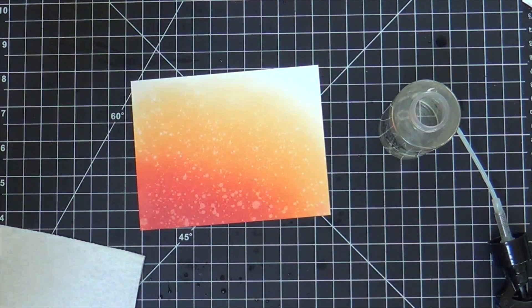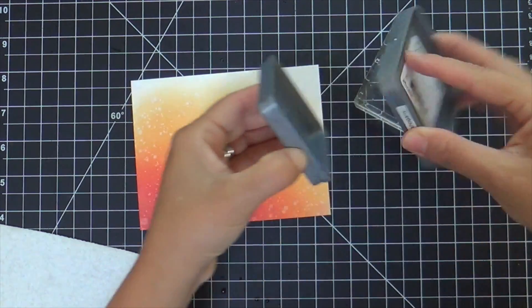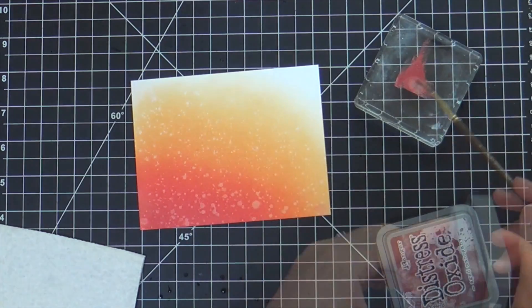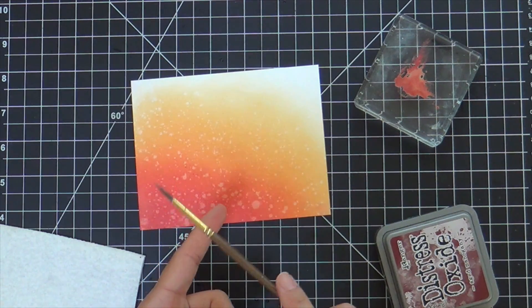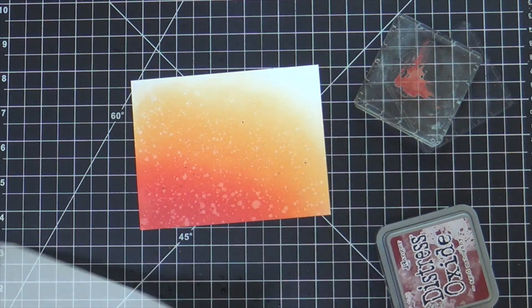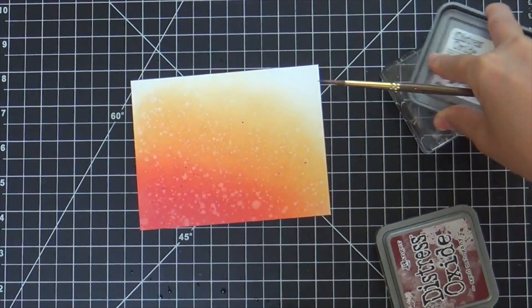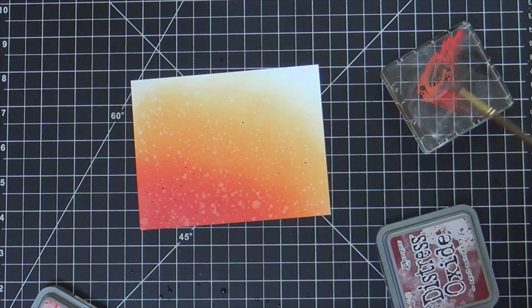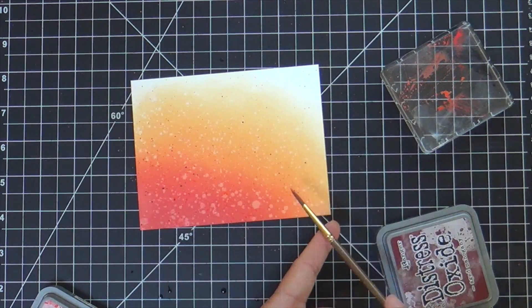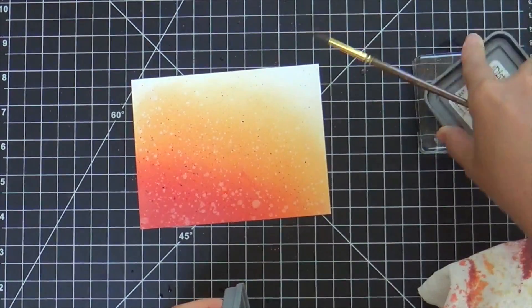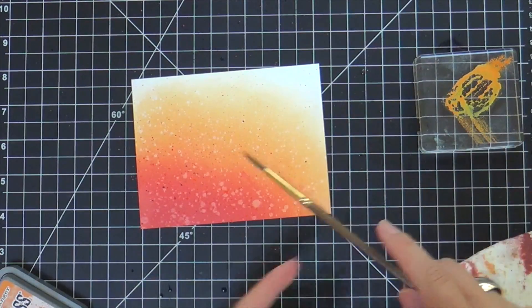Then I smooshed a little bit of the same oxides that I used—I did the Aged Mahogany, flicking on some of that, and then I did a little bit of Candied Apple flicks. I went full throttle on the flicks. Go hard or go home is the motto for this flicking.